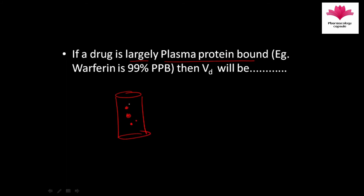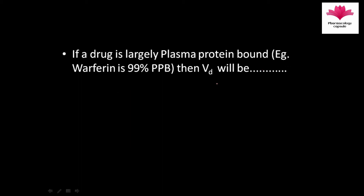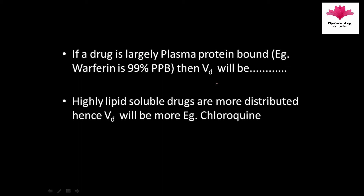If a drug is largely plasma protein bound, the volume of distribution will be low, because the drug stays within the systemic circulation. On the other hand, if a drug is highly lipid soluble, it will be more distributed into tissues, and hence its volume of distribution will be more.